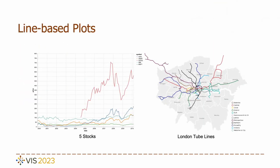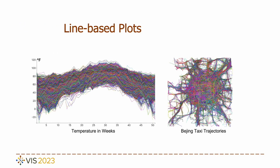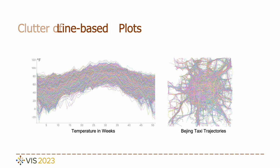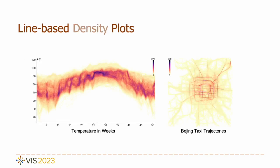Line-based plots, such as line charts or transportation route maps, are commonly employed for visualizing both time series and trajectories. High line volumes can result in visual clutter impairing data perception. By using density instead of traditional lines, we create what we call a line-based density plot. This approach effectively eliminates visual clutter, bringing out the high density patterns.